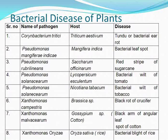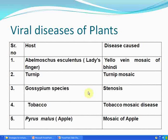Viral diseases in plants: yellow vein mosaic of bhindi occurs in Abelmoschus esculentus (lady's finger). Turnip mosaic occurs in turnip; stenosis in Gossypium species; tobacco mosaic disease in tobacco; and mosaic of apple in apple.